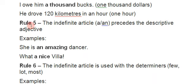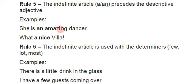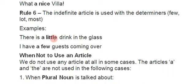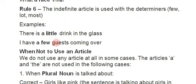Rule number five: the indefinite article 'a' or 'an' precedes a descriptive adjective. For example: 'She is an amazing dancer.' 'What a nice villa!' Rule number six: the indefinite article is used with determiners like 'few', 'little', and 'lot'. For example: 'There is a little drink in the glass.' 'I have a few guests coming over.'